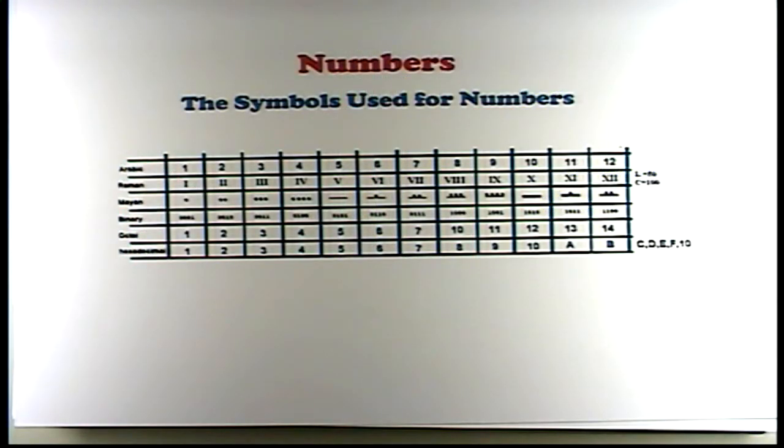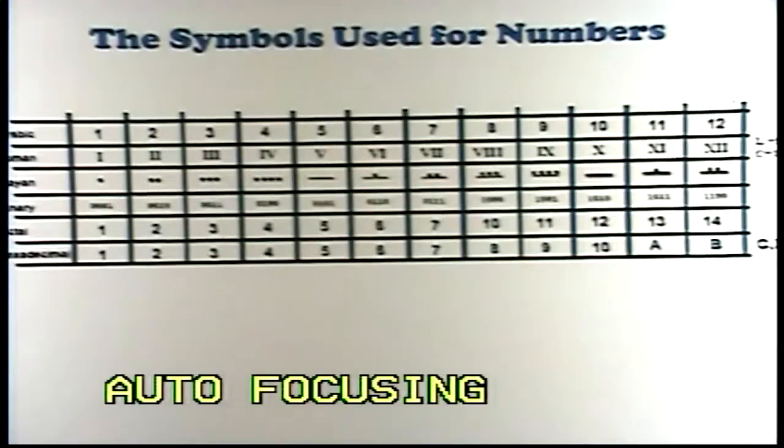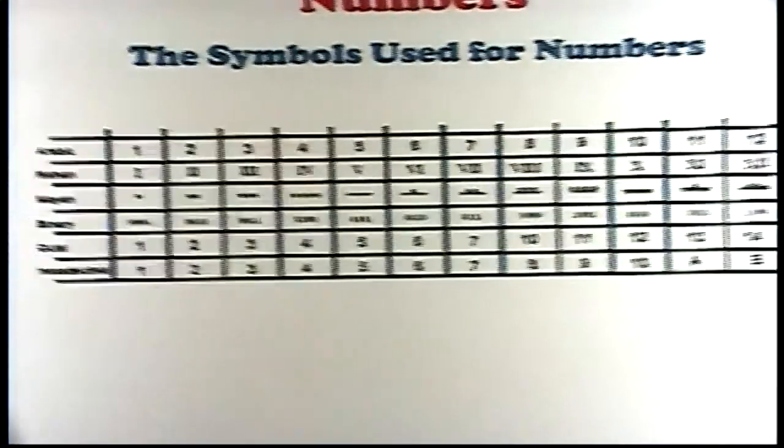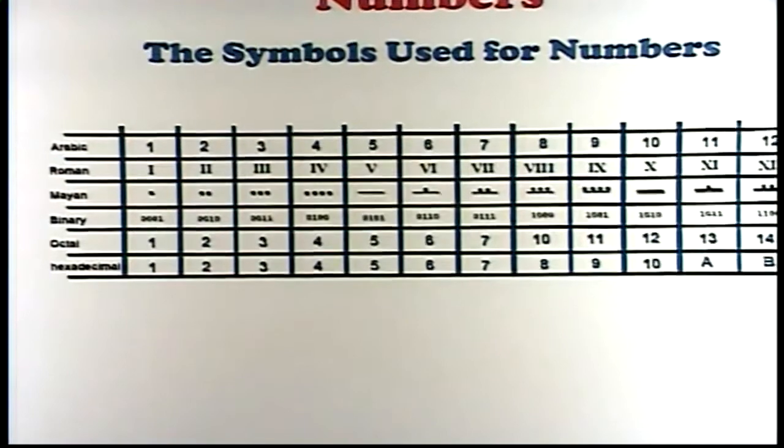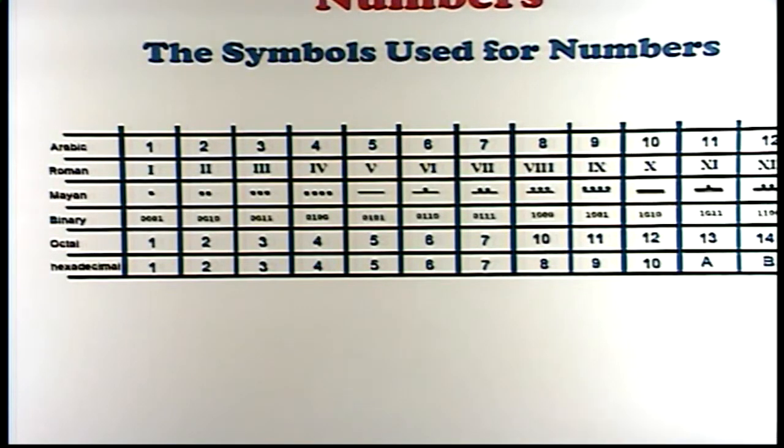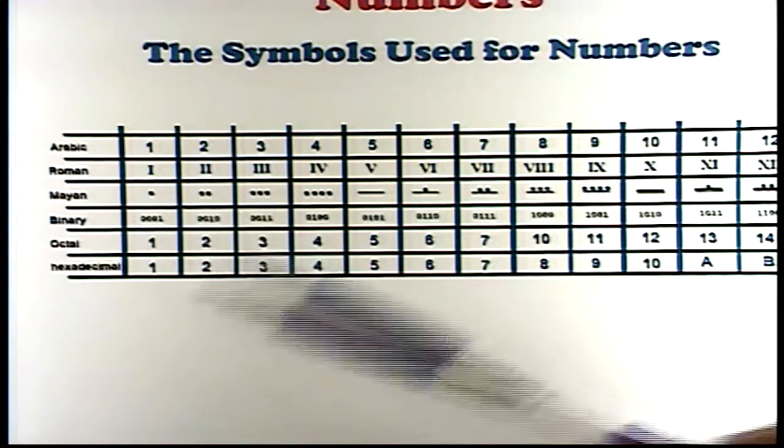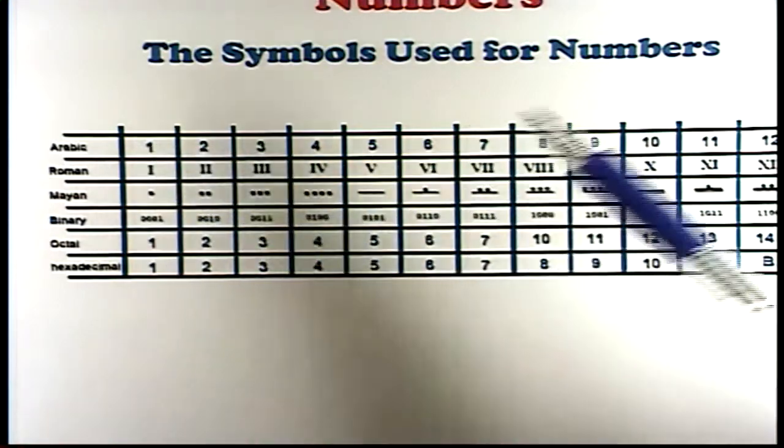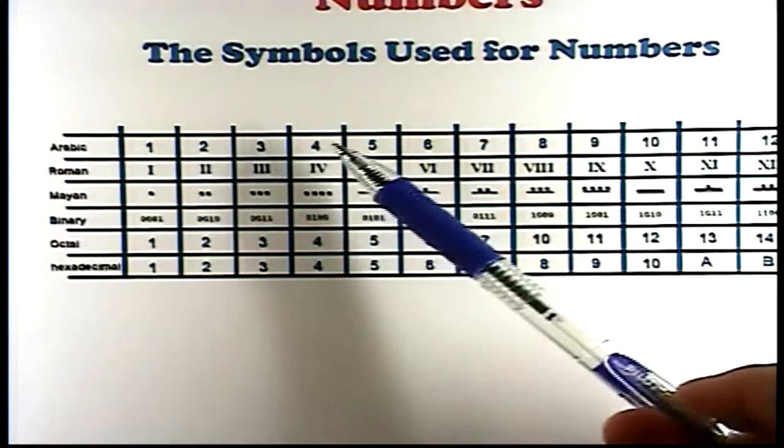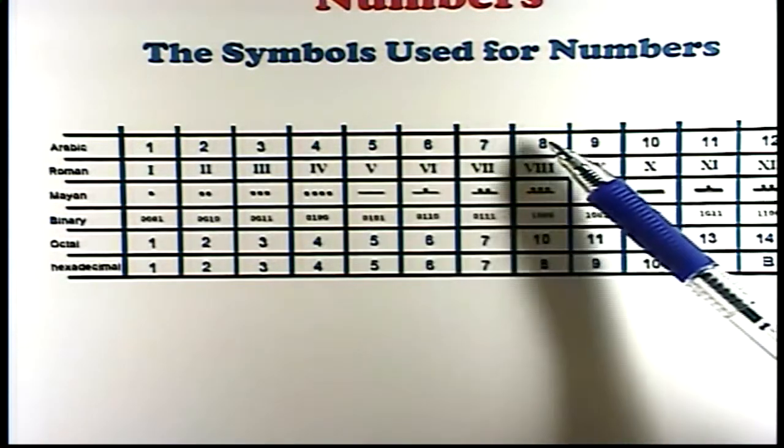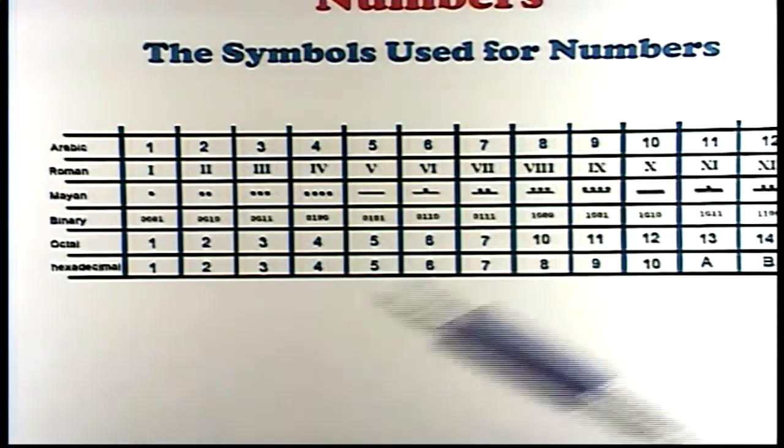There are many types of symbols that we use for numbers. Let me zoom in here a little bit and let you take a look at this. Okay, we have some examples here of symbols used for numbers. What we use primarily are the Arabic numbers, like one, two, three, four, five, six, seven, eight, nine, ten, eleven, twelve.